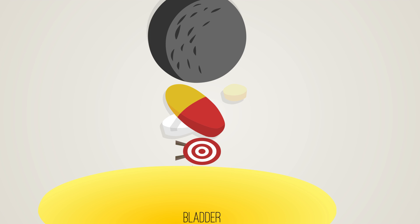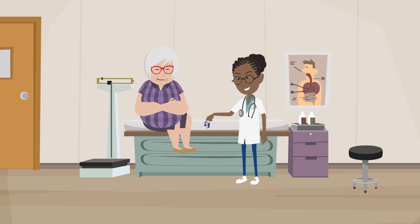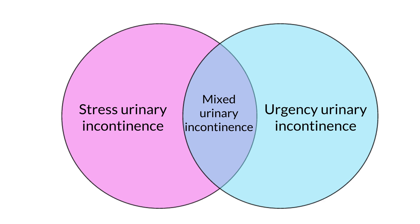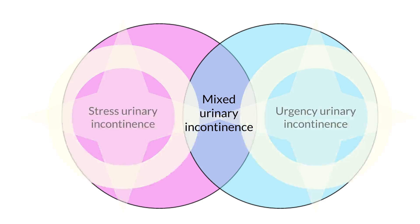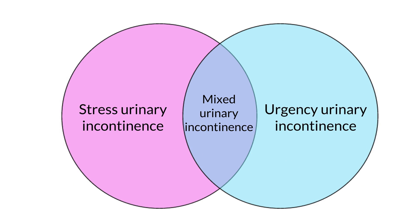Anticholinergic drugs block the parasympathetic cholinergic receptors and exert their effects on urgency incontinence through M2 and M3 receptors by inhibiting involuntary detrusor contraction. Ms. Pease goes to see her urogynecologist, who starts her on an anticholinergic medication to decrease her urinary urgency. The third type of incontinence is mixed urinary incontinence — a combination of stress and urgency urinary incontinence.